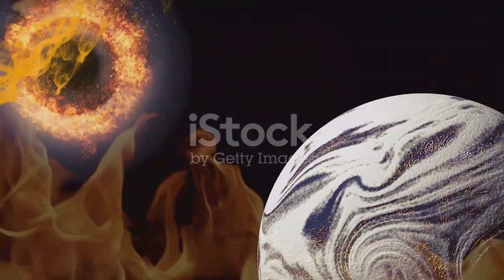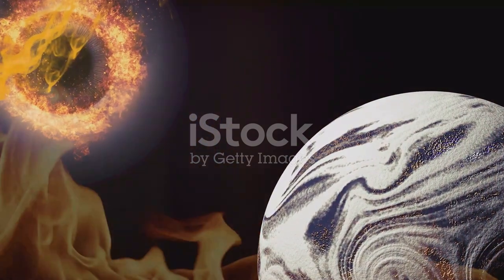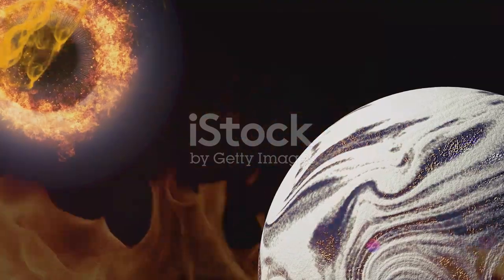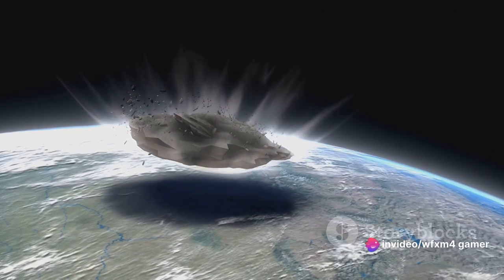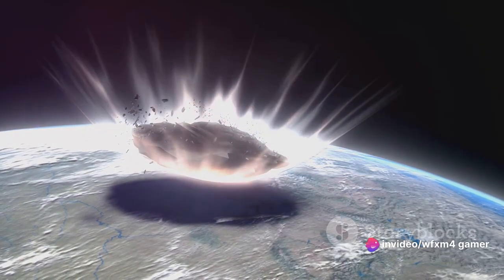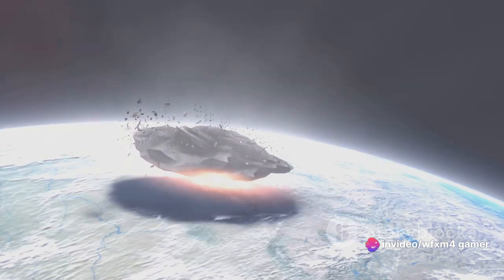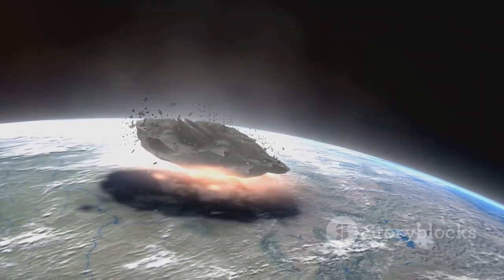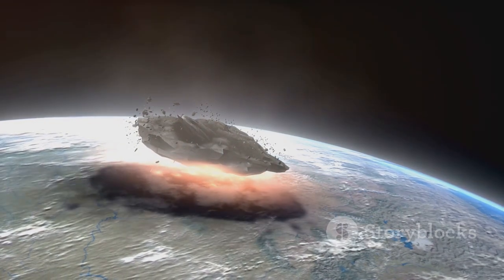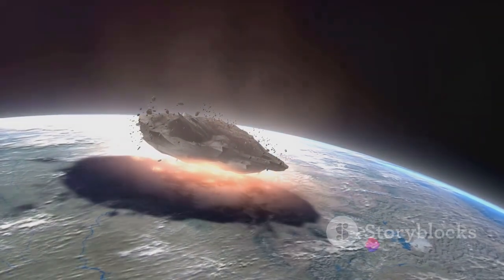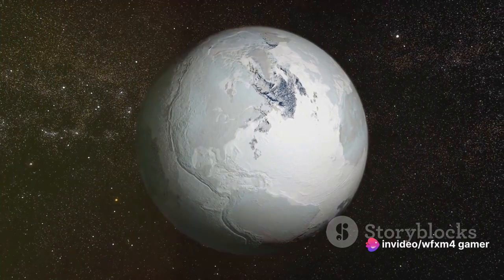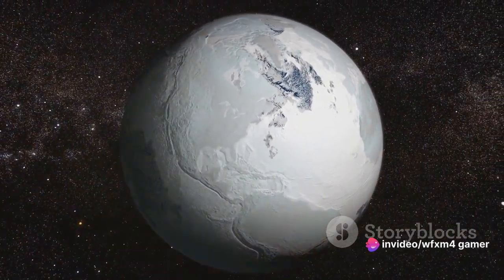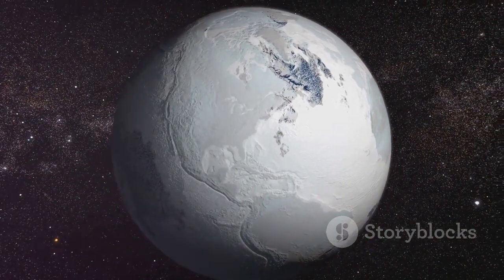The impact was apocalyptic. The energy set free was equivalent to a billion Hiroshima bombs, forming a crater about 120 miles wide. The ground quaked, and shockwaves rippled across the globe, causing earthquakes and volcanic eruptions. In the aftermath of this cataclysm, a vast amount of debris was thrown into the atmosphere, blocking the sun and casting Earth into darkness. Devoid of sunlight, photosynthesis came to a stop, causing a drastic drop in global temperatures.